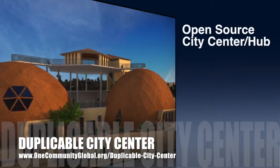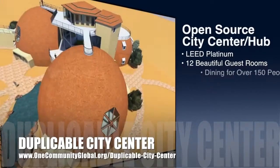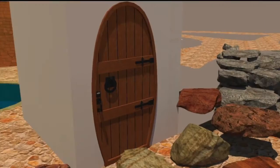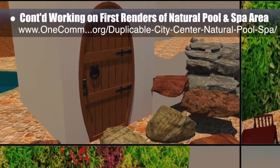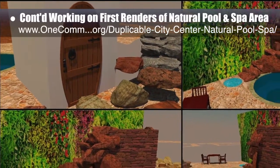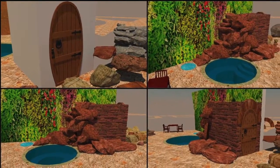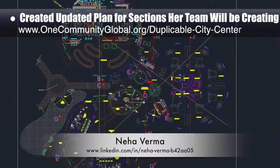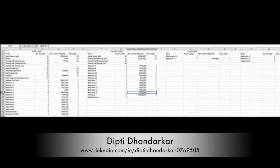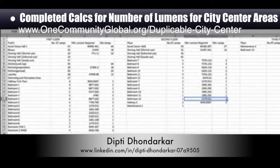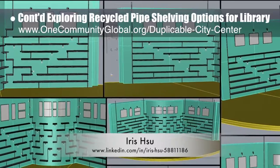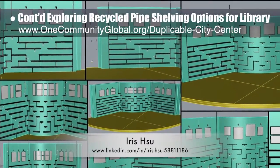One Community is also creating an open source duplicable city center designed to be LEED Platinum certified, provide 12 guest rooms, dining for over 150 people, and laundry and recreation space for over 300 people, while saving money, time, space, and resources. This week the core team continued working on the first renders of the natural pool and spa area, focusing on the new locker and arched stonework around the hobbit door, mechanical room access, and waterfall rock placement. Neha Verma, construction project manager and bachelor of architecture, created an updated plan for her team's sections. Dipty Dondarkur, electrical engineer, completed lumen calculations for each city center area. Ira Sue, industrial designer, continued exploring recycled pipe shelving and lighting designs for the city center library.